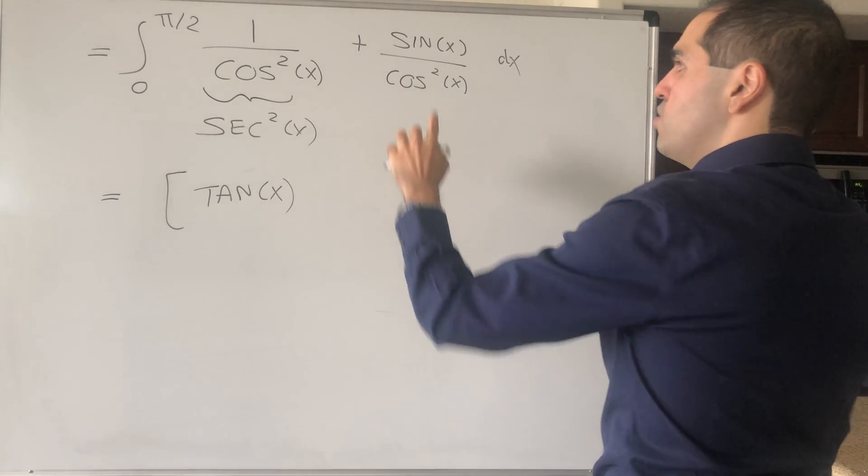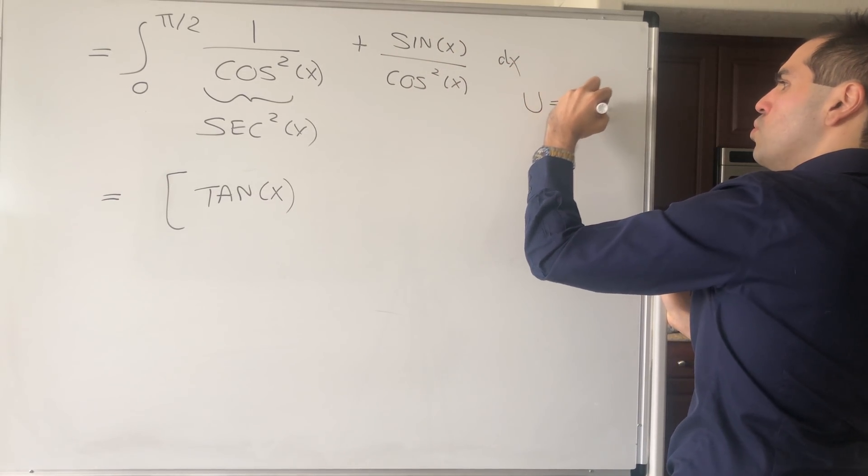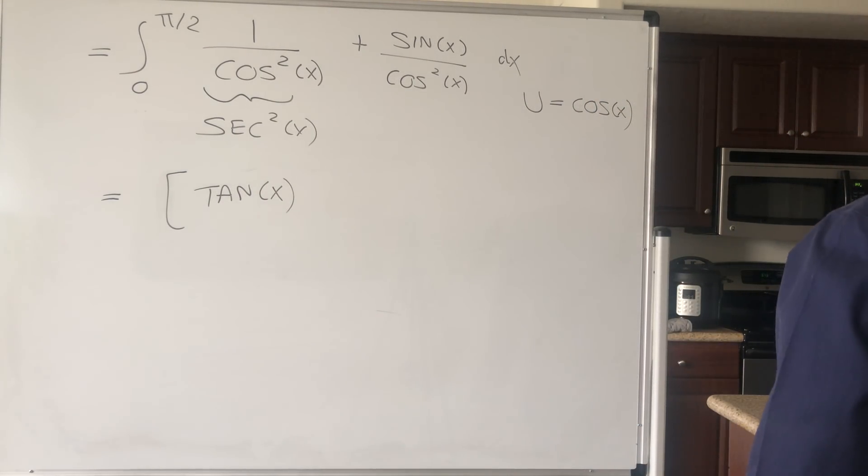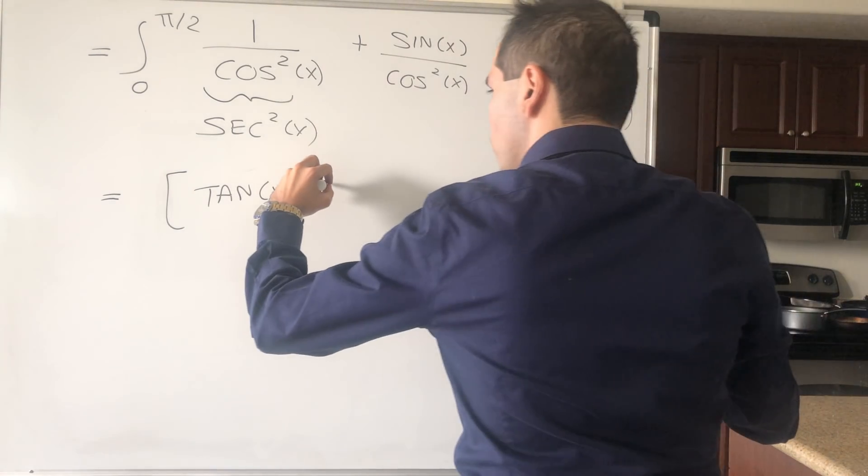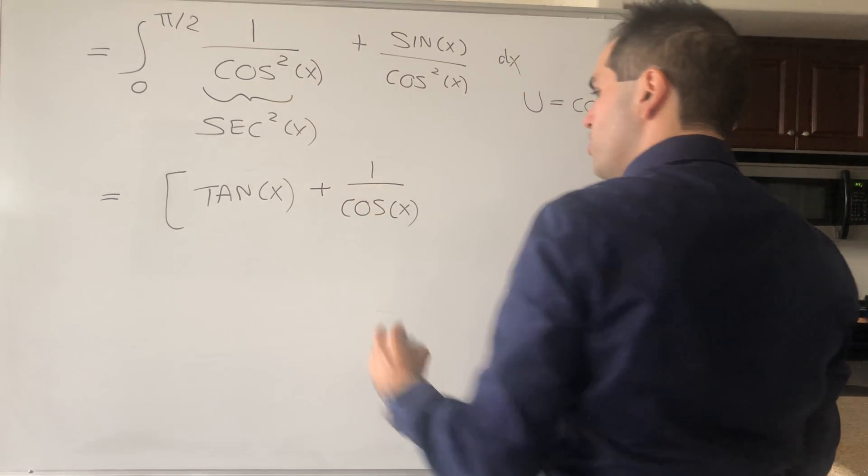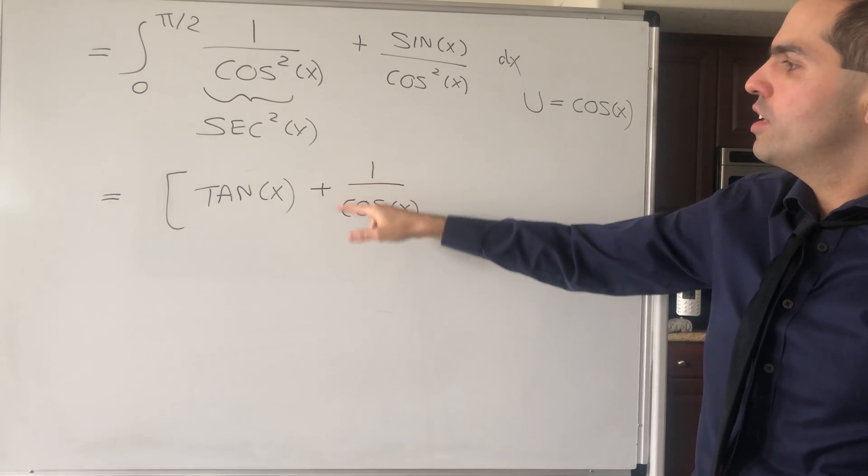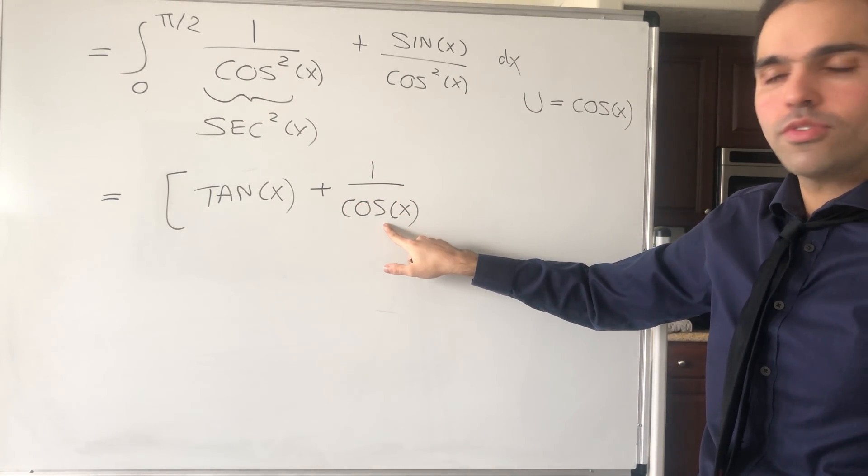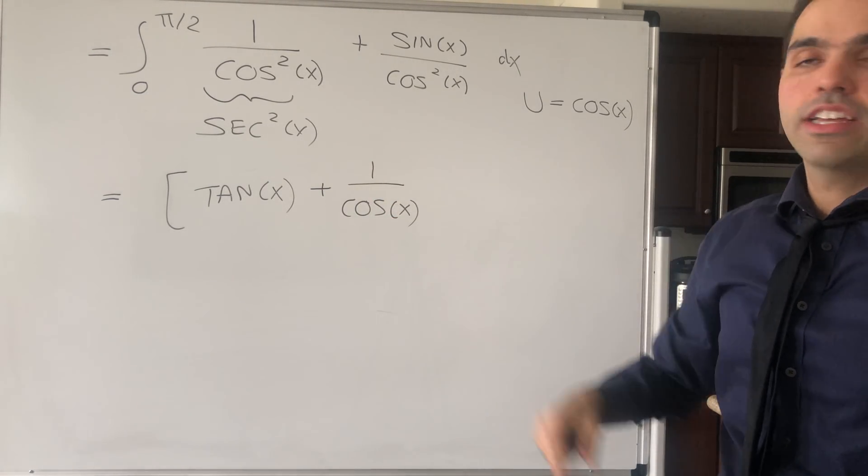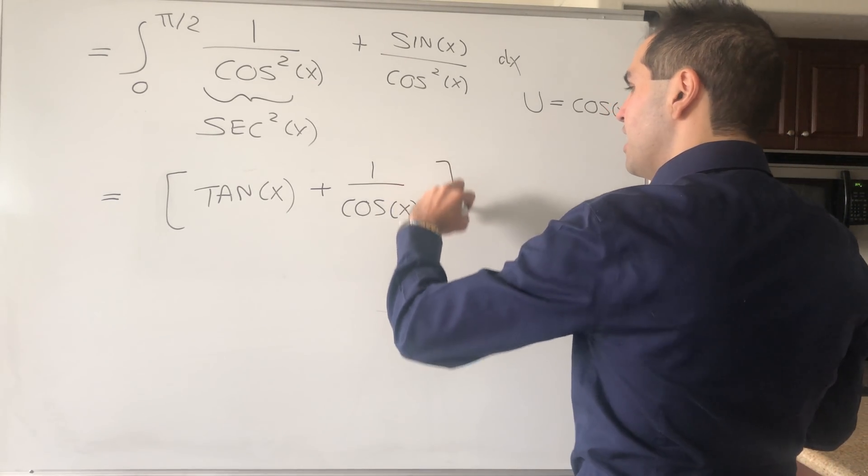For this one, you could simply use a u-substitution u = cos(x), or you can just say it directly. I believe it becomes plus 1/cos(x) by the chain rule, because if you differentiate this you get -1/cos²(x), but if you differentiate cosine you'll get an extra factor of -1 which cancels out. That's from 0 to π/2.